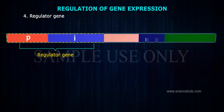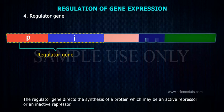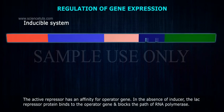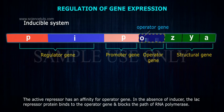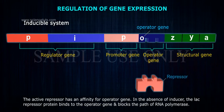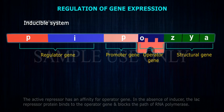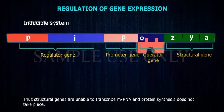The regulator gene directs the synthesis of a protein which may be an active repressor or an inactive repressor. In the absence of an inducer, the LAC repressor protein binds to the operator gene and blocks the path of RNA polymerase. Thus, structural genes are unable to transcribe mRNA and protein synthesis does not take place.